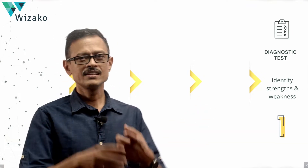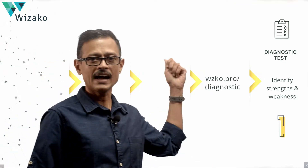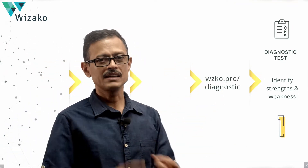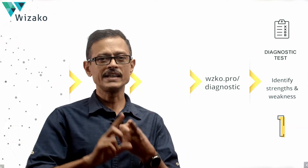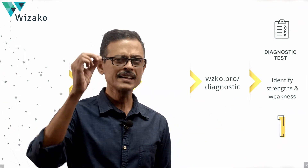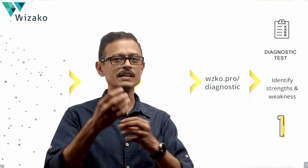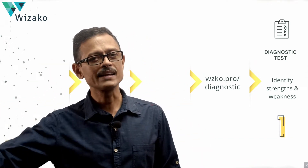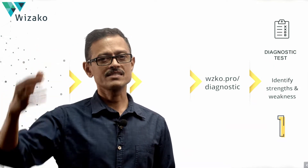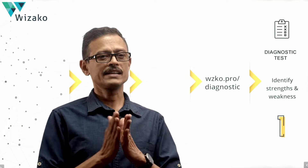Make a note of your findings. The diagnostic test requires at least one quant and one verbal section. There is a free diagnostic test available at Visaco's learning portal — use the URL wzko.pro/diagnostic. It's one hour and five minutes: 35 minutes of quant with 20 questions and 30 minutes of verbal with 20 questions, exactly mimicking the GRE pattern. Spend another hour reviewing your mistakes and a couple of hours building a strategy around your weak areas.